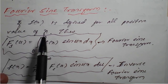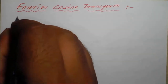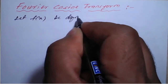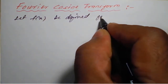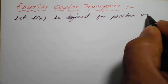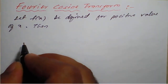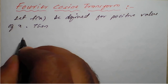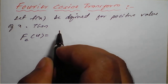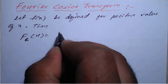Similarly, we will see the Fourier cosine transform. Let f of x be defined for positive values of x. Then the Fourier cosine transform — where c stands for cosine — Fc of u, is given by the integration from 0 to infinity of f of x into cosine of u x into dx.